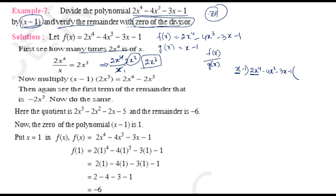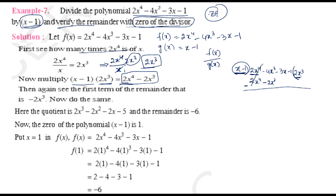The divisor is x - 1. We write 2x³ as the first term of the quotient. Now multiply the divisor by 2x³: x times 2x³ equals 2x⁴, and minus 1 times 2x³ equals minus 2x³. So we write 2x⁴ minus 2x³ below.